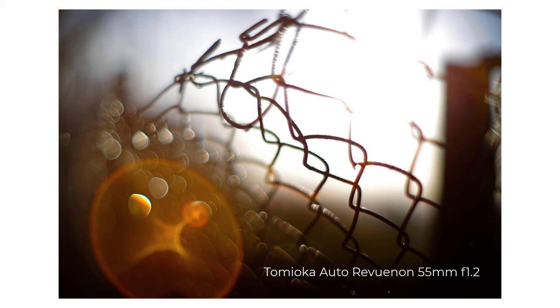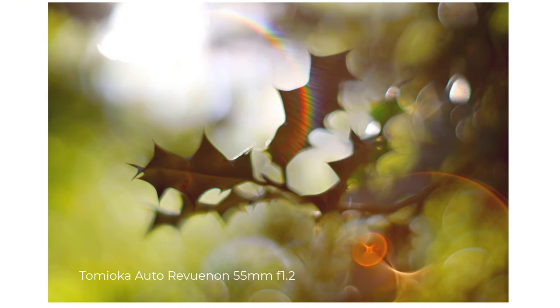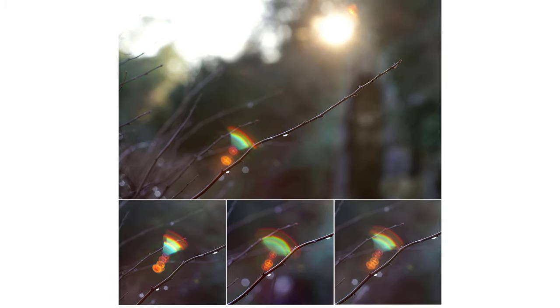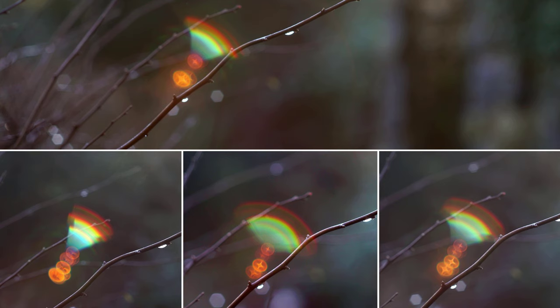The next type of flare I'm going to categorize as a 3D funnel effect. Rather than try to describe this shape I'm going to show you some examples, starting with this shot. I'll have a closer look at the circle at the front — it has a sort of star in the center. These stars can become much more clearly defined and elaborate. To show you the effects in action, this video is from the Tomioka Auto Revunon 55 f1.2. Here are four photos taken at slightly different apertures with an Auto Yashinon 50 f2. The star shape in the center of each circle is very clear in these images, while the 3D funnel actually looks more like a fan.